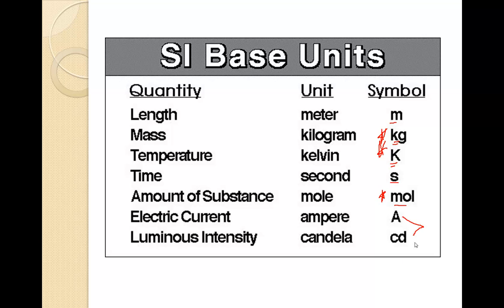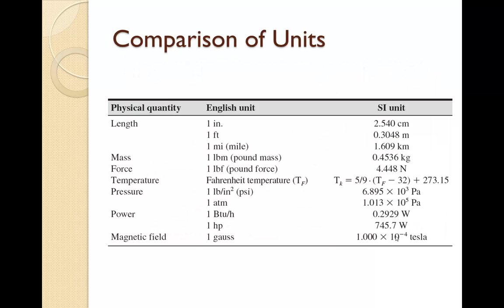Granted, these last units are used more in physics, but they are used in chemistry on occasion. Just because scientists use primarily the SI units does not mean that the English units are completely discounted. You can actually make direct comparisons — for instance, one inch is the same thing as 2.540 centimeters. So as long as you can convert between the two and compare them, you're okay.